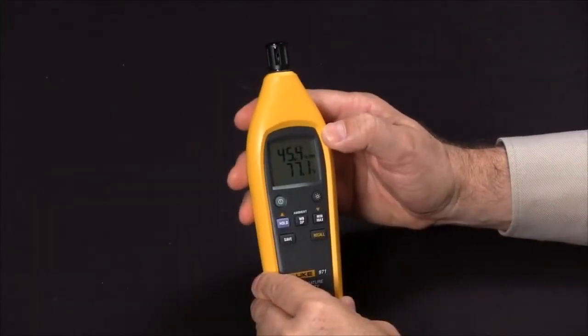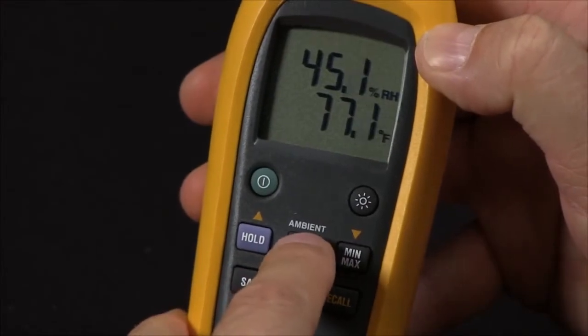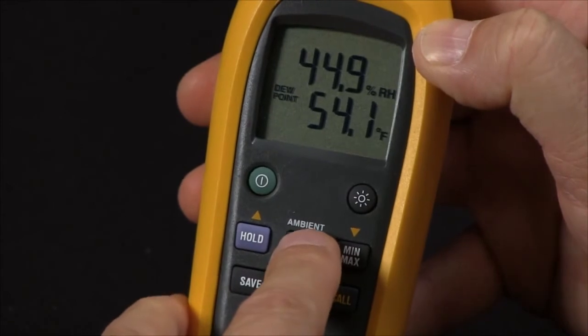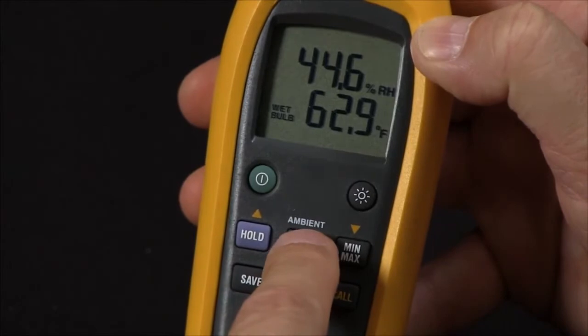Now your meter will measure in ambient mode. To access your dew point measurement, press the ambient button one time. To get to your wet bulb temperature, press it once more. To return back to ambient temperature, just press the button one more time.